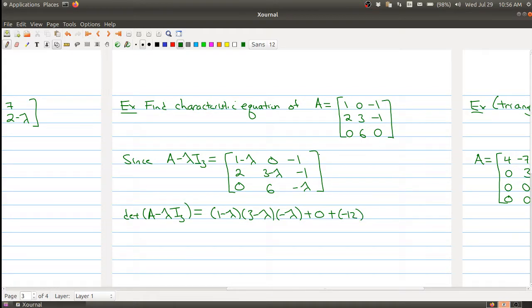And then I want to do the subtracting the antidiagonal. So in this direction, I would get a 0. This direction, I would get minus 6 times negative 1 times 1 minus lambda. And then I do the last diagonal. And there's my expression.